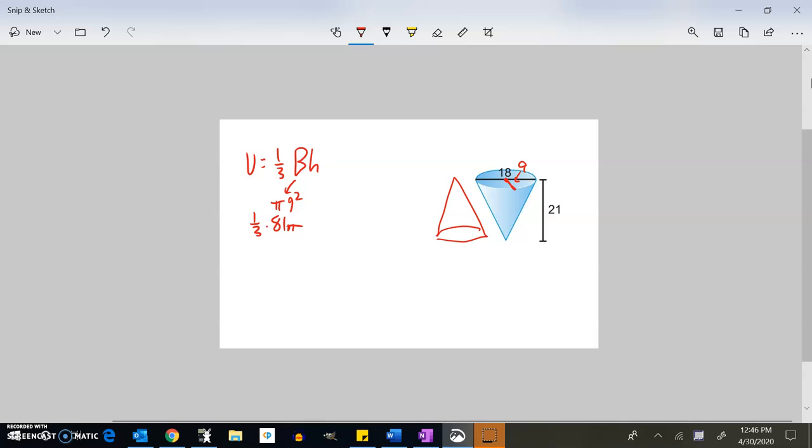So it's going to be one-third times 81 pi times the height. The height is 21. And so there it is right there. I could multiply those all together. One-third times 81 times 21 is 567 pi. I can do that on my calculator.